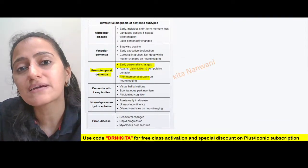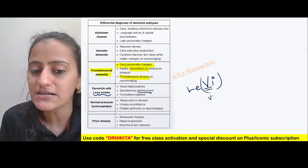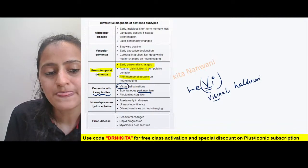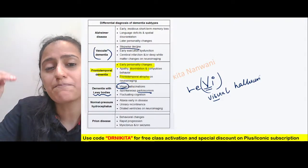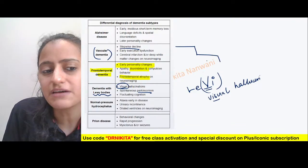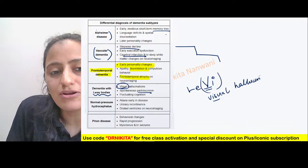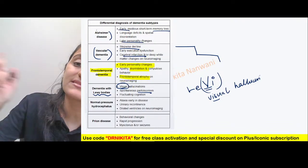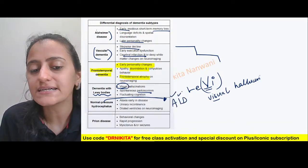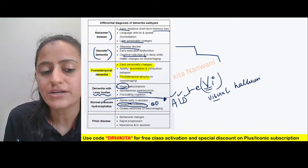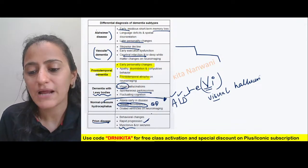For other dementias: mammillary bodies and medial thalamus affected is Wernicke's encephalopathy, caused by alcohol. Substantia nigra is Parkinson's. Caudate nucleus is Huntington's chorea. In Lewy body dementia, we have Parkinsonism features and visual hallucinations. Vascular dementia shows stepwise decline — patient is stable, then sudden decline, then stable again — because of vascular infarcts. Alzheimer's has very early memory loss with personality changes coming later. In frontotemporal, personality changes come earlier. Normal pressure hydrocephalus has the triad: ataxia, incontinence, dementia. Prion disease has myoclonus and rapid progression.